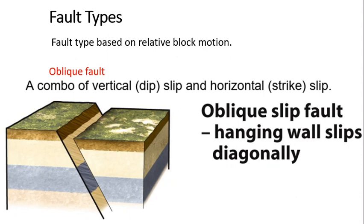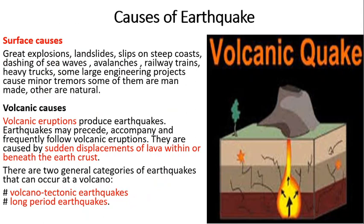Next comes the causes of earthquakes. Surface causes: human beings are able to cause tremors or small shakes on the Earth's surface through great explosions or bombings, nuclear bombings, landslides, slips on steep coasts, dashing of sea waves, avalanches, railway trains, heavy trucks, and some engineering projects. Most of these are created by human beings, except avalanches, sea waves, and steep coasts.